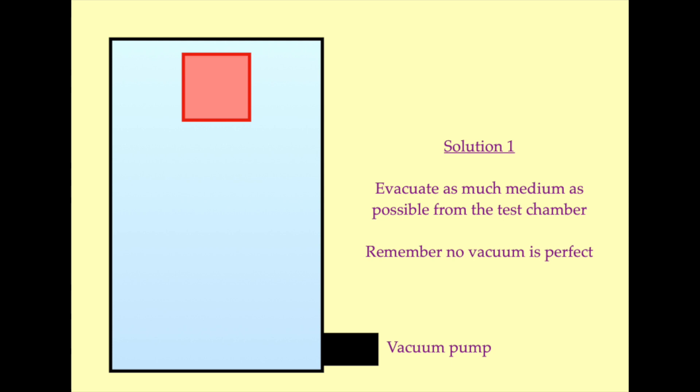The most direct and immediate solution to all three of these problems is to evacuate the chamber as completely as we can, thus reducing the density of the medium inside the chamber to as close to zero as we can manage. For this purpose, we attach a vacuum pump to the outside of the test chamber. It should always be remembered, however, that no vacuum is perfect.